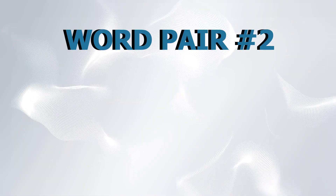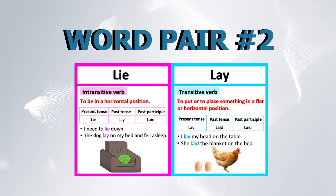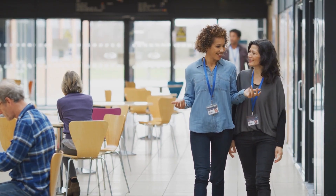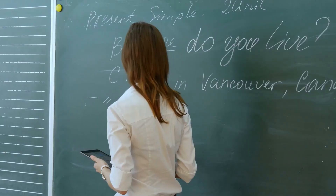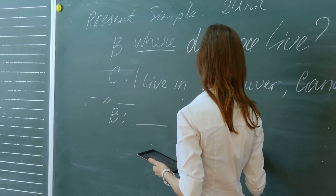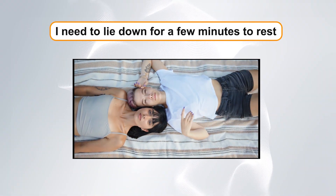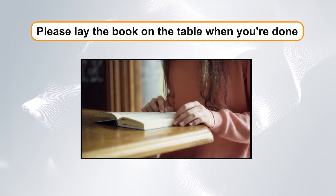Word pair number two: lie versus lay. Lie means to recline or be in a horizontal position, while lay means to place something down. The confusion here arises because the past tense of lie is lay, and so people do not know which one should be applied in most situations. Example sentences: One, I need to lie down for a few minutes to rest. Two, please lay the book on the table when you're done.